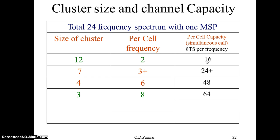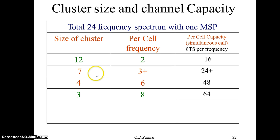So in a cell there will be 16 users who can communicate at the same time. If we take the same 24 frequencies and divide into a seven-cell cluster, we can have three-plus frequencies per cell, and multiplying by eight gives us around 24 users simultaneously communicating. That means the channel capacity is improved if we decrease the number of cells in a cluster.